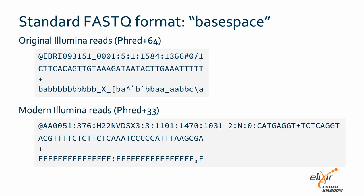Fastq files are the standard text-based format for high throughput sequencing data, of which the basic unit is a sequencing read. Data for each read is split across four lines: a unique sequence identifier rich in metadata, the raw sequence of A's, T's, C's, and G's, an underused descriptor line, and an ASCII encoded read quality score.